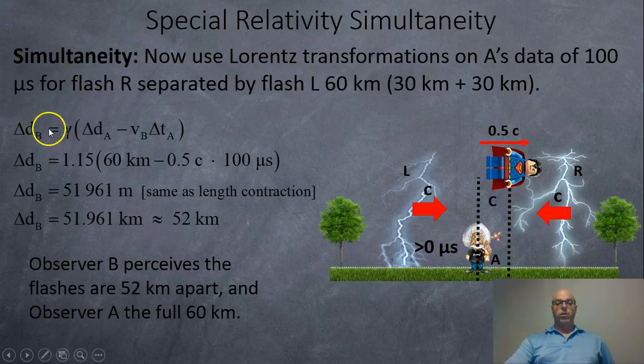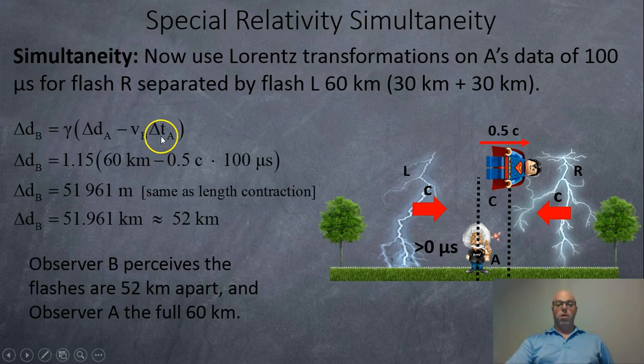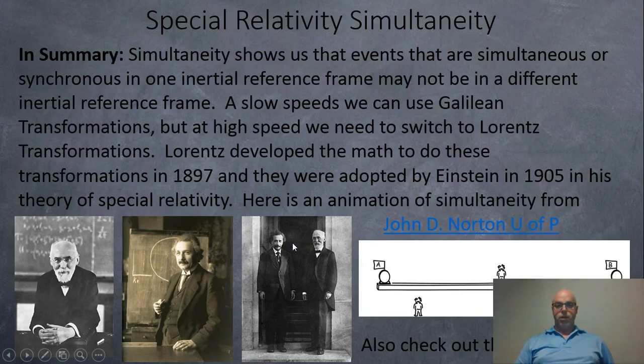If we just take a look using the Lorentz formula, it will have the gamma factor 1.15. There was a 60 kilometer gap between the two events, according to observer A. The relative velocity between A and C happens to be light. It took 100 microseconds for these events to occur. And so that's going to cause a separation distance of around 52 kilometers. And that actually works out to be the same answer as length contraction.